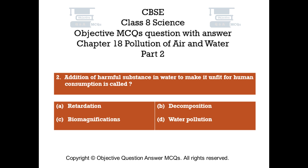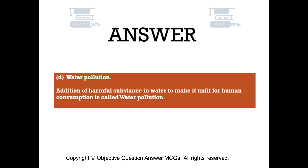Question number 2. Addition of harmful substance in water to make it unfit for human consumption is called: Option A: Retardation. Option B: Decomposition. Option C: Biomagnification. Option D: Water pollution. The right answer is Option D — Water pollution. Addition of harmful substance in water to make it unfit for human consumption is called water pollution.